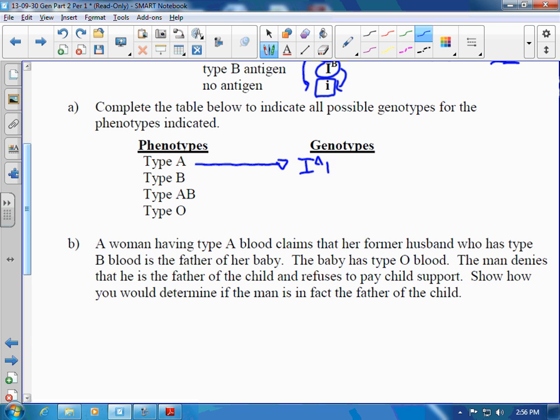We could see type B being IB IB, or IB little i, another heterozygous.